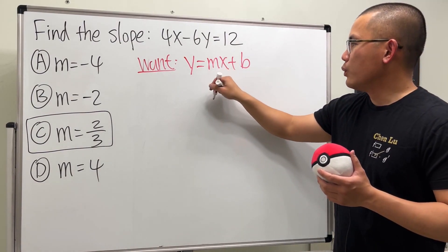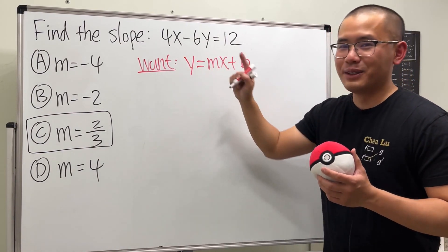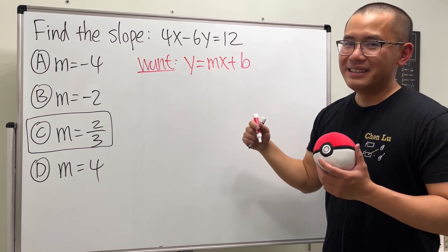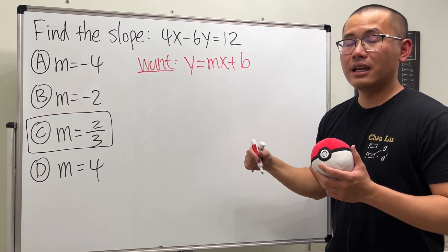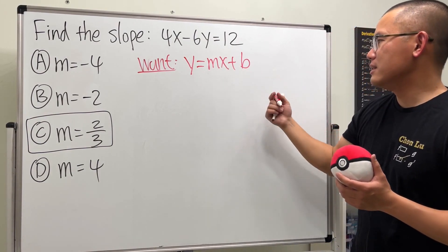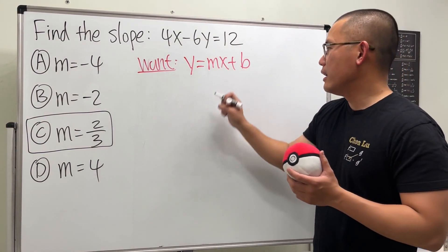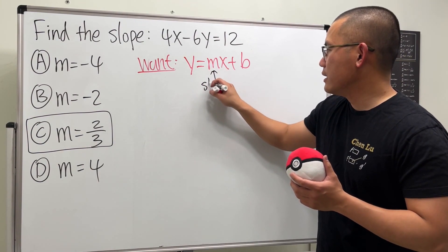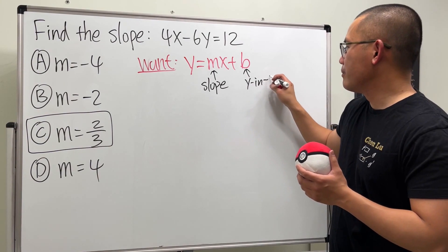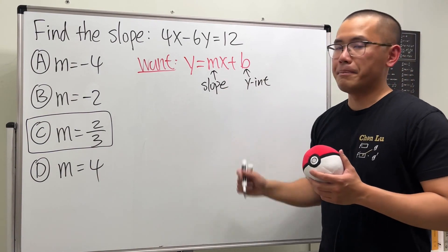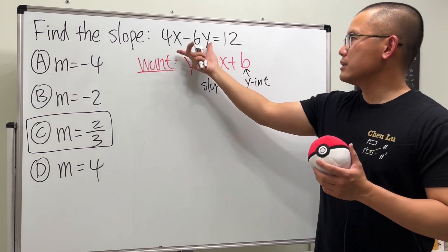Because this way, once the y is isolated, the m is the slope - the number in front of the x right here. The coefficient of x is the slope, and the b is actually the y-intercept. Let me just write this down for you guys. Here's the slope and here is the so-called y-intercept. But we care about the slope, so it's the m.